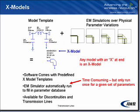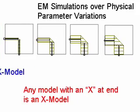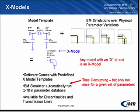Finally, I want to mention that a number of our discontinuity models — like bends, T's, and open-ended lines — have something called X models. These are EM-based models. Basically, we take a fairly simple model template; here you see an L and two C's modeling a bend. We then fit the parameters — the L and two C's — to EM simulations run in the background, and compile a table to give the final model. We've run these EM simulations ahead of time when we ship you the software, so the X models are very fast to run, and yet they're much more accurate than a standard closed-form model because we've actually fit the parameters to EM.